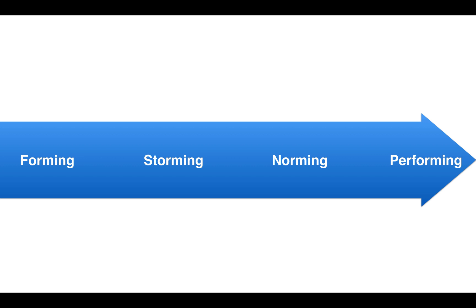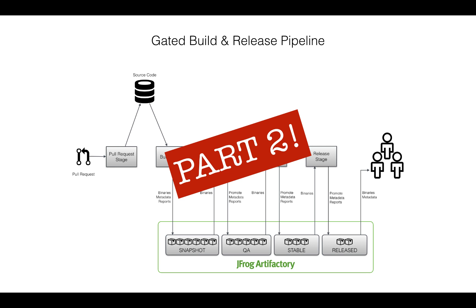That's the overview of the software manufacturing platform. In part two of this series, we'll talk about the workflow that the platform enables, as well as how it allows for an agile gated build and release process that ensures high velocity but prevents architectural errors from causing system instability.